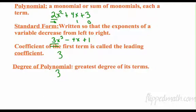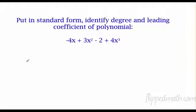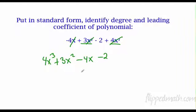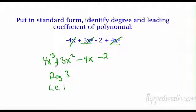Let's try an example: we're going to put this in standard form, then identify the degree and the leading coefficient. I look for my highest exponent — that's here — so I put 4x to the third first, then my next highest is 3x squared, then looking for the next: I have to remember this is a negative, so that's minus 4x, and then minus two. That's standard form. What's the degree? The degree is the highest exponent, so the degree is three. What's the leading coefficient? The leading coefficient is four.